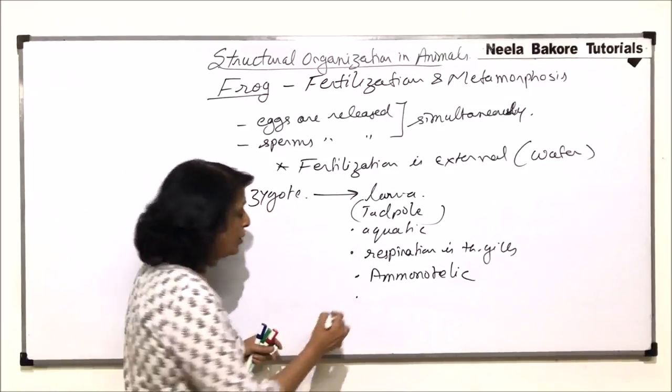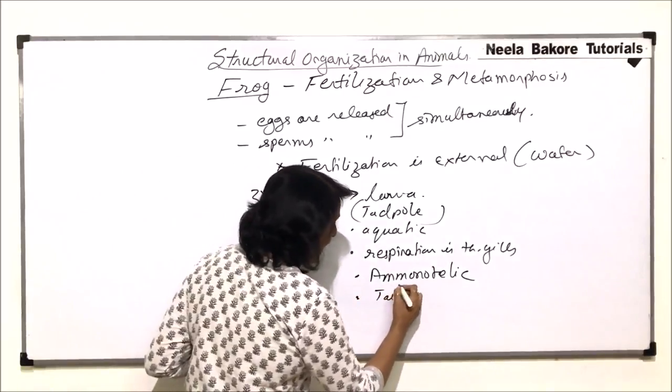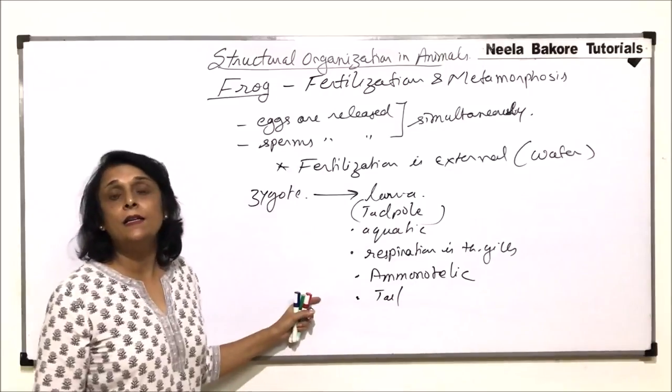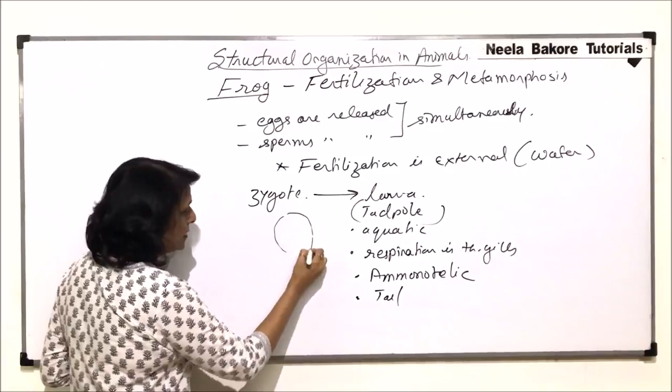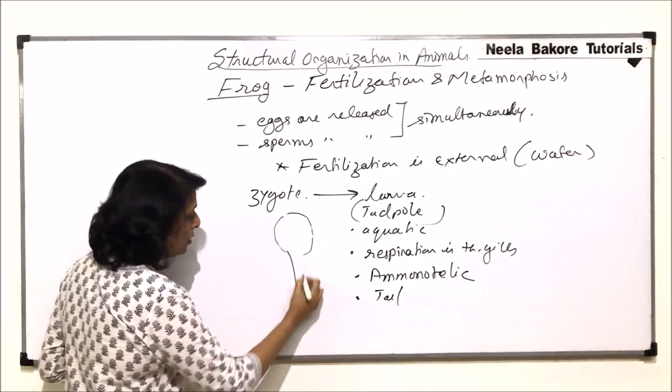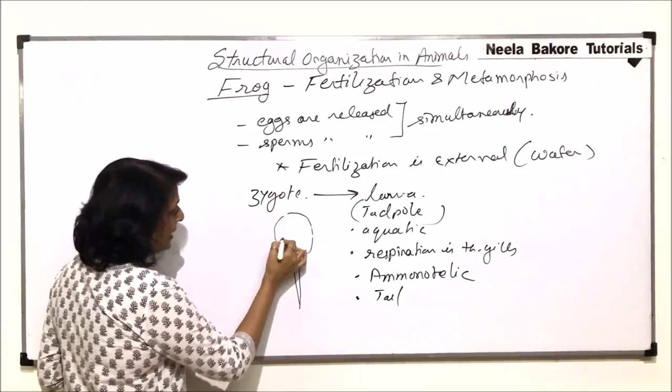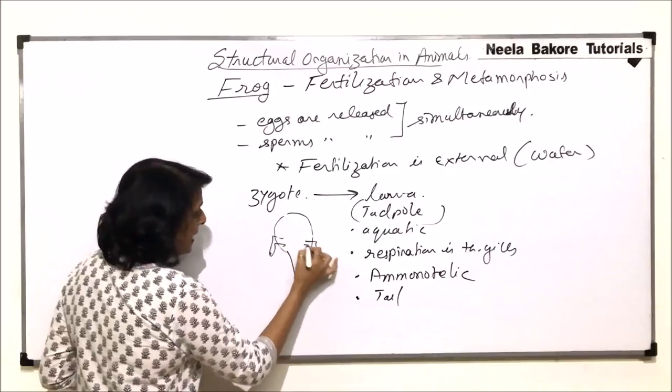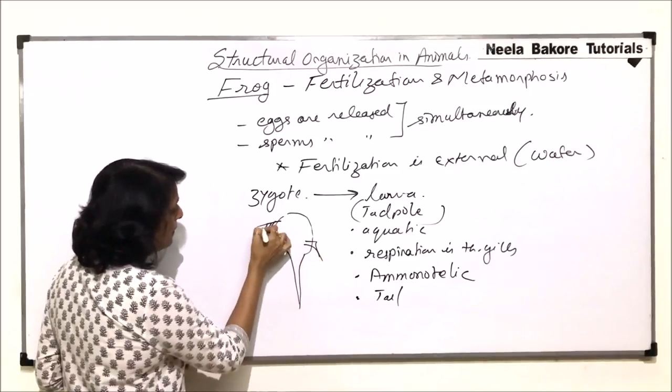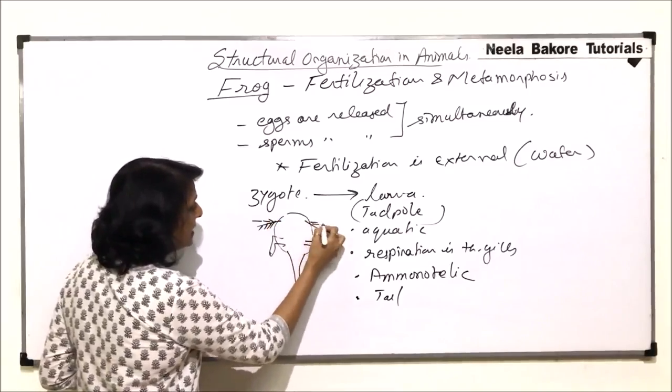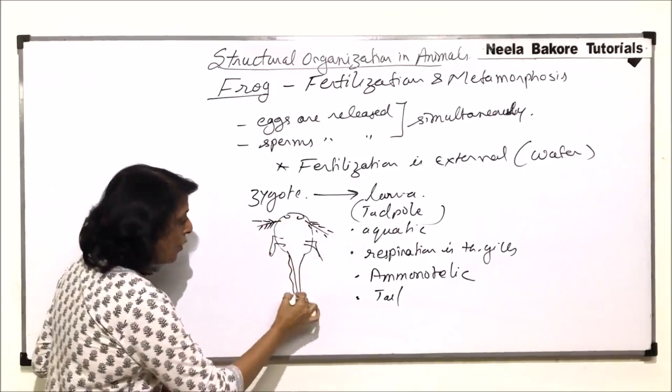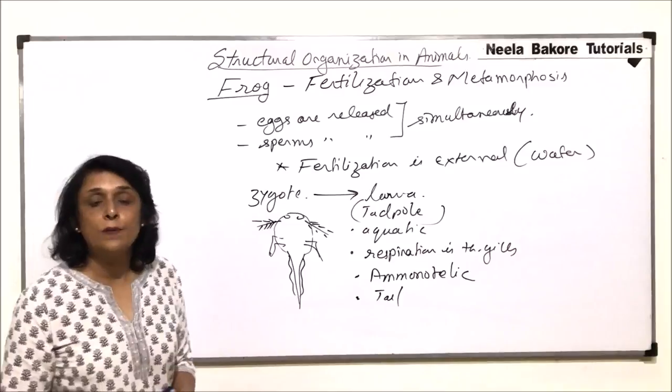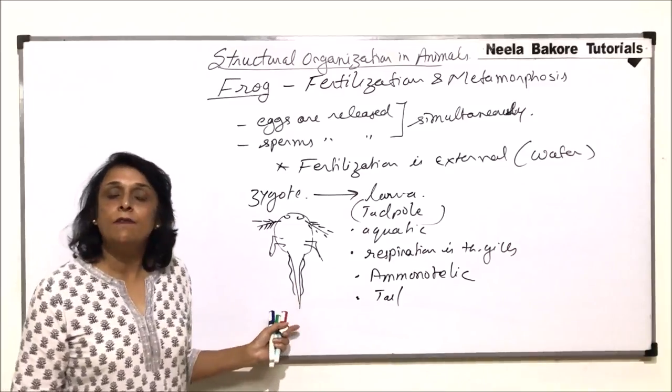The tadpoles also have a tail. A well-developed tail is there. If we try to see the body, the body is ovoid, a long tail is present and the limbs are there. And anteriorly, we find that there are these gills. So this is how the structure of a tadpole looks.